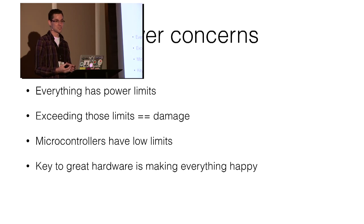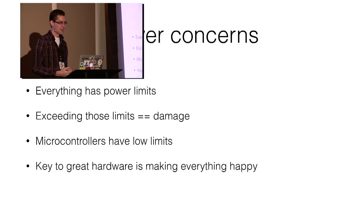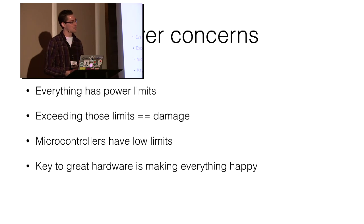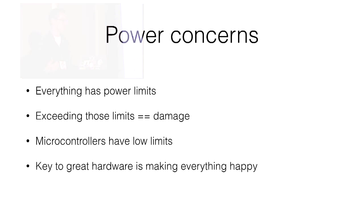Usually you have to have something in between — especially for a DC motor. Always have something in between. The key to making great hardware is making sure everything is happy power-wise: understand that certain things need high power and certain things are low power, and figure out how to interface the two to make both of them happy — that's how you can make some great robots. And with that, I bid you happy hacking.